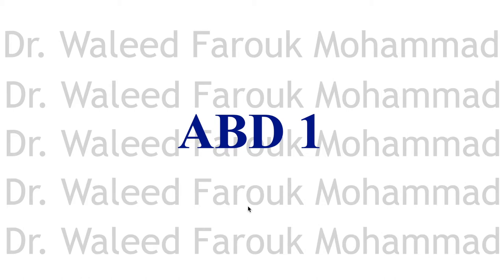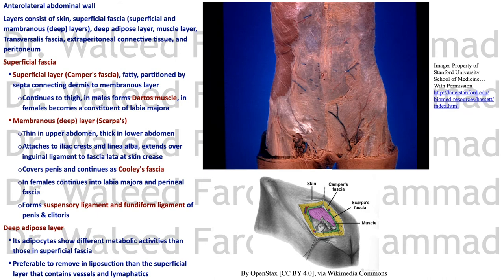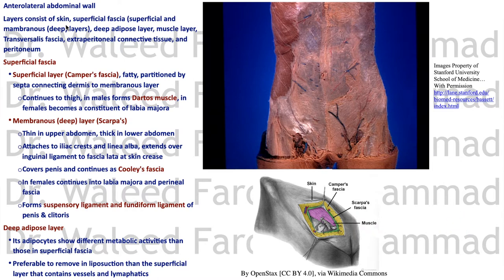Hello and welcome to my channel. Today in this lecture we will start the abdomen series by studying the anterolateral abdominal wall. The layers are: skin, superficial fascia divided into superficial and deep layers, a deep adipose layer, the muscle layer, transversalis fascia, extra-peritoneal connective tissue and peritoneum, and finally the abdominal cavity.